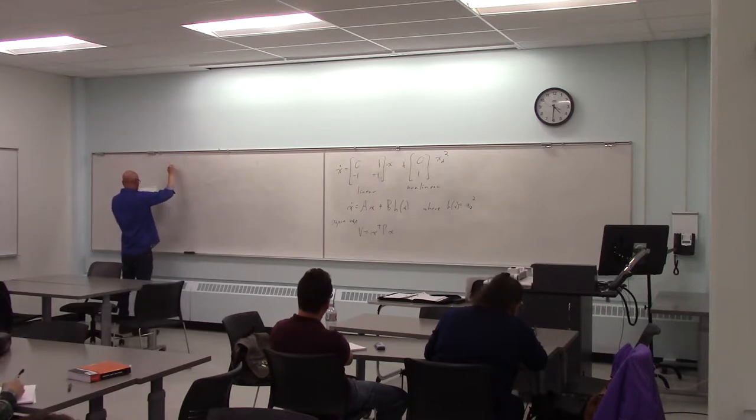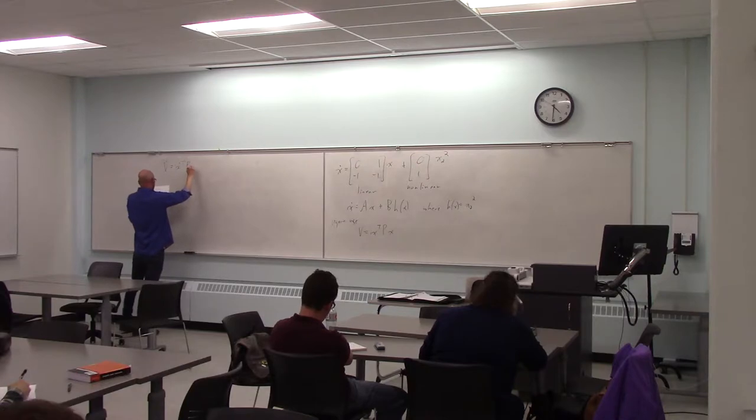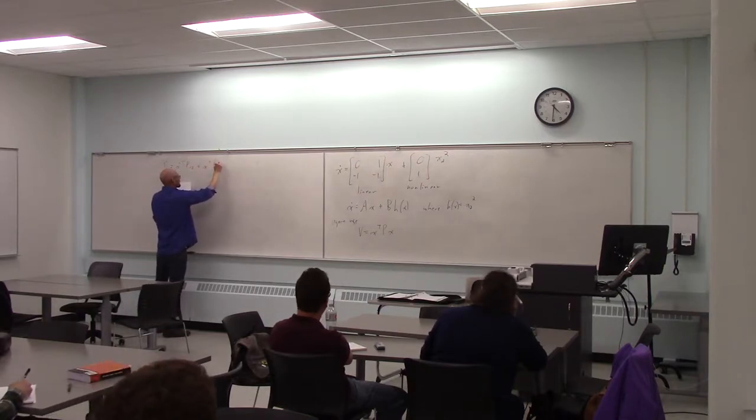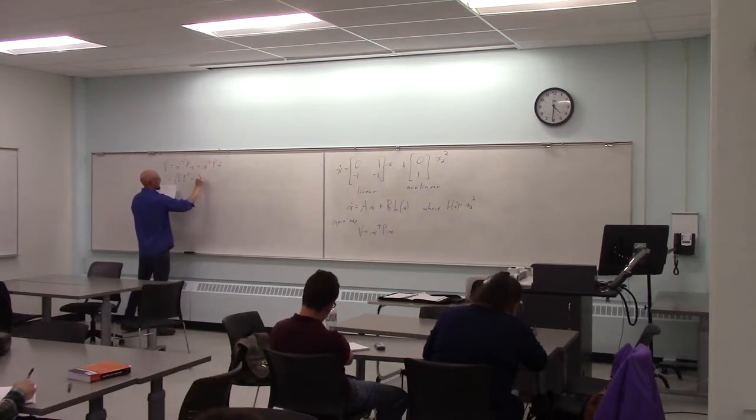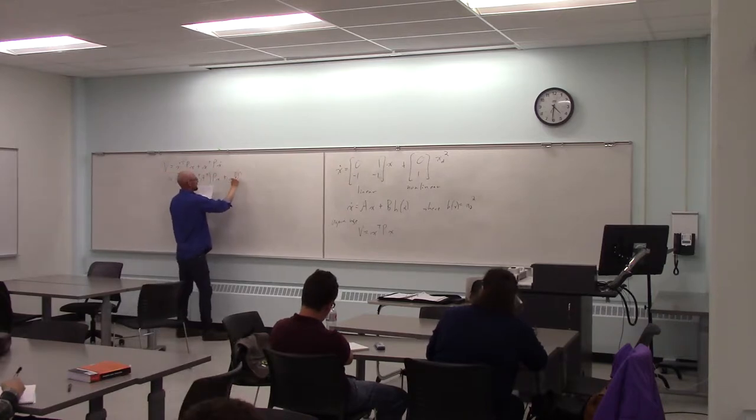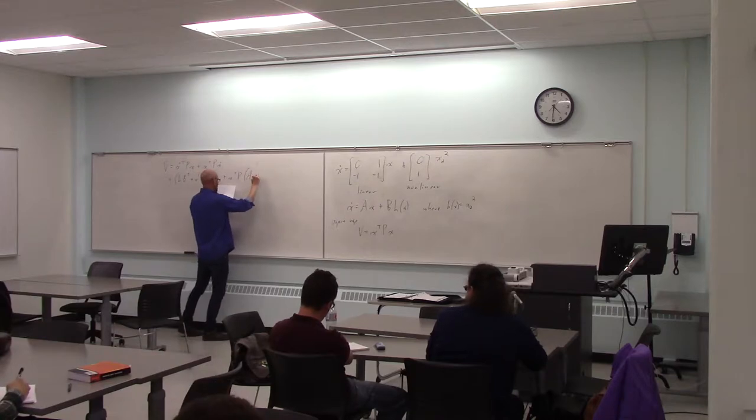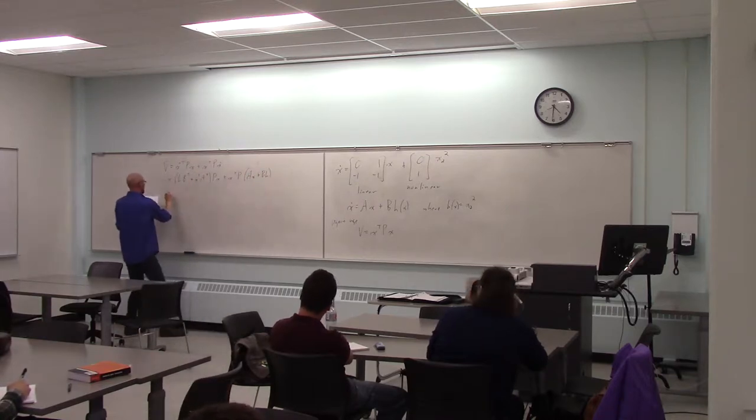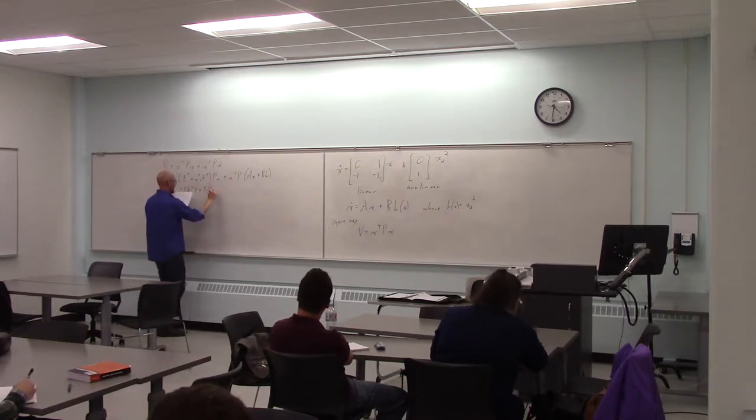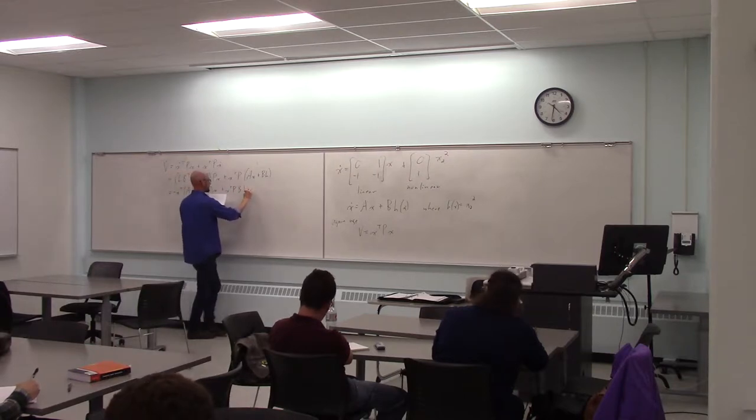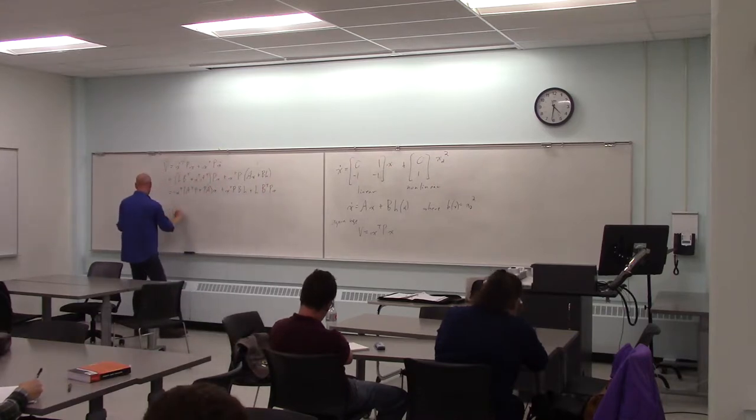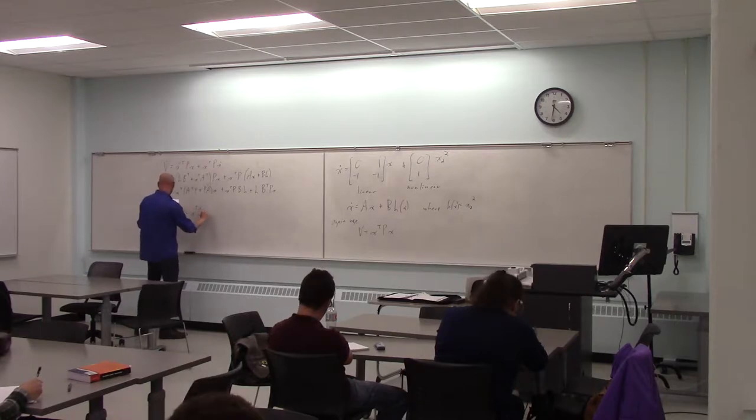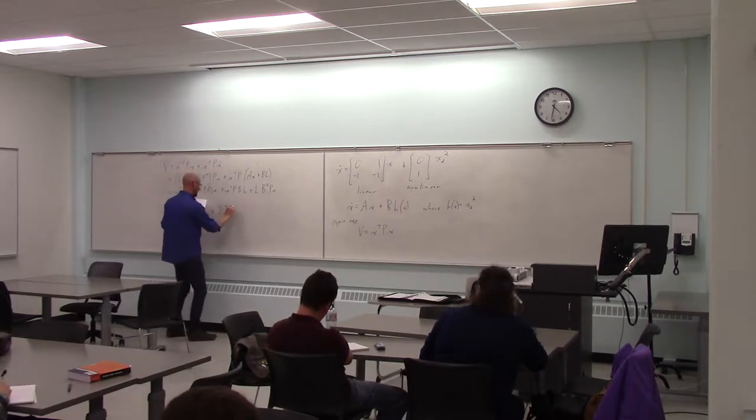So v dot is equal to x dot transpose px plus x transpose px dot equals x transpose a transpose px plus x transpose pbh plus x transpose pbh plus x transpose px. So I get v dot equals negative x transpose qx plus x transpose pbh.